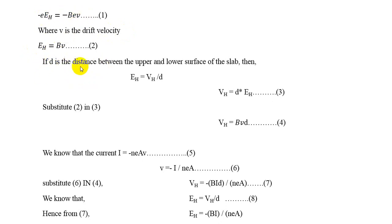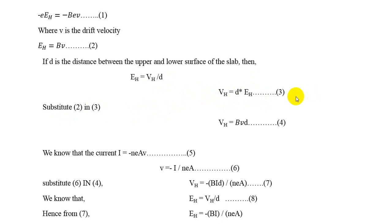Now, if D is the distance between the upper and lower surface of the slab, then E_H = V_H / D, since the electric field is defined this way. So V_H = D · E_H. Substituting equation 2 (E_H = V·B) into equation 3 (V_H = D · E_H), we get V_H = V·B·D. Call this equation number 4.